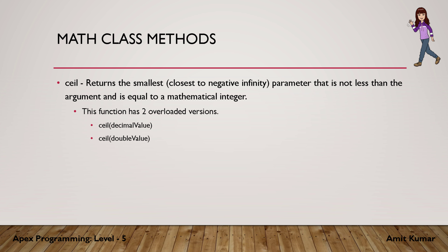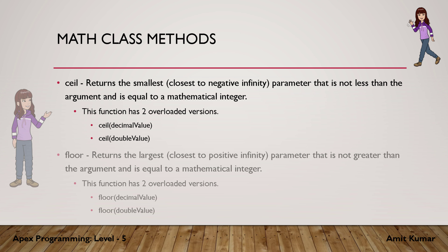ceil returns the smallest value, closest to negative infinity, that is not less than the argument and is equal to a mathematical integer. For example, ceil of 4.5 returns 5 — a value greater than the decimal value specified. We can provide a decimal or a double value.